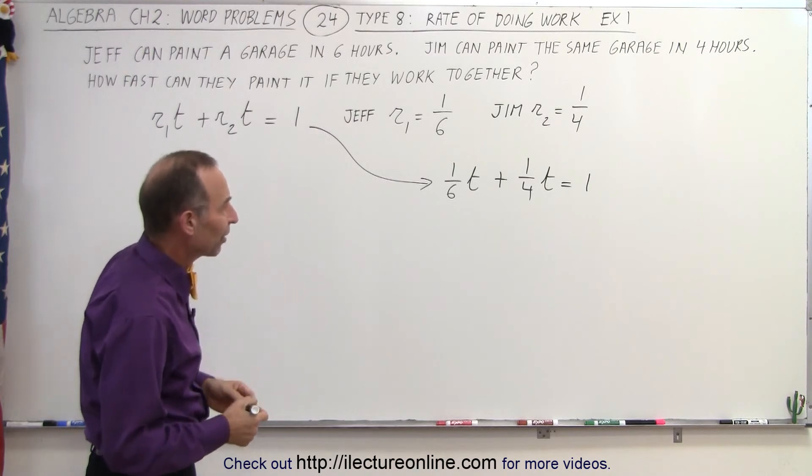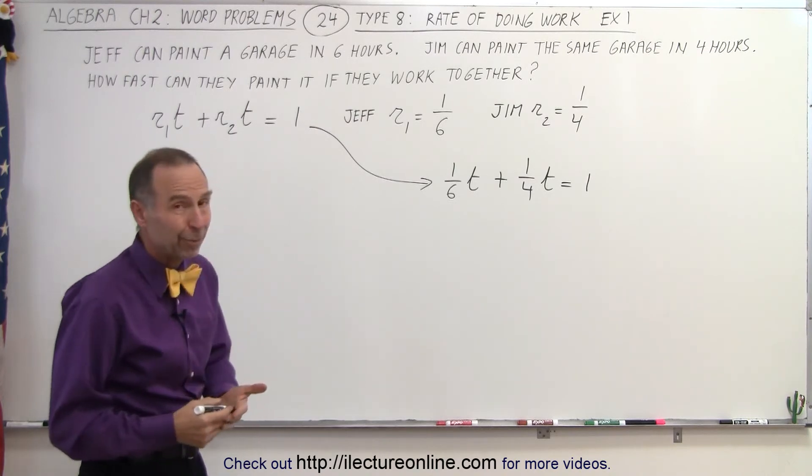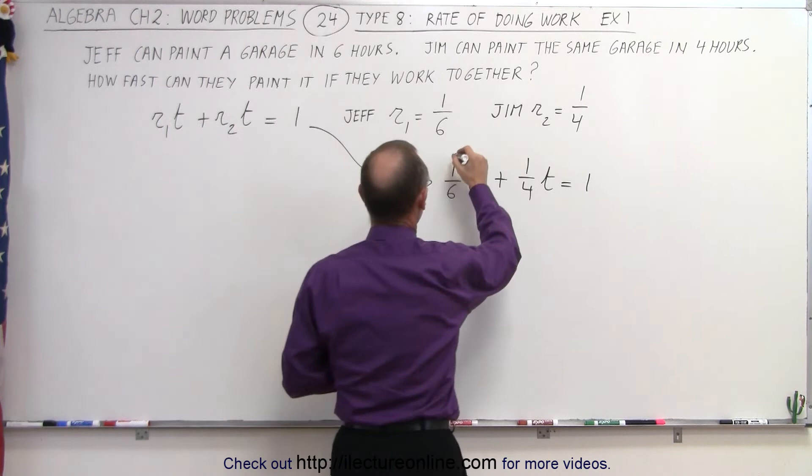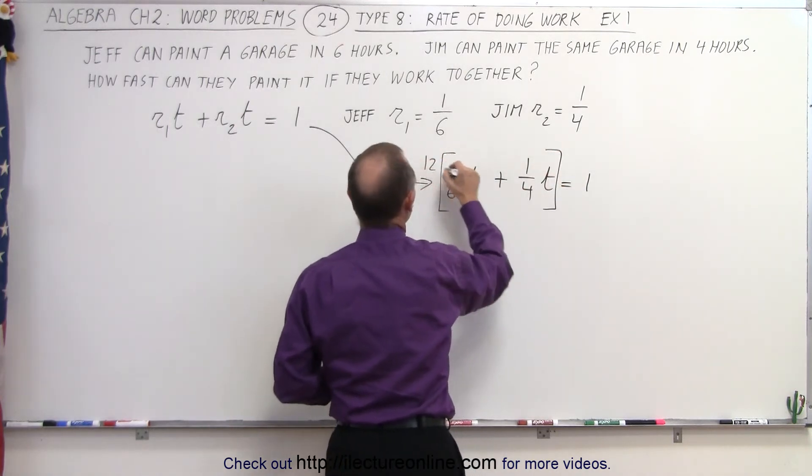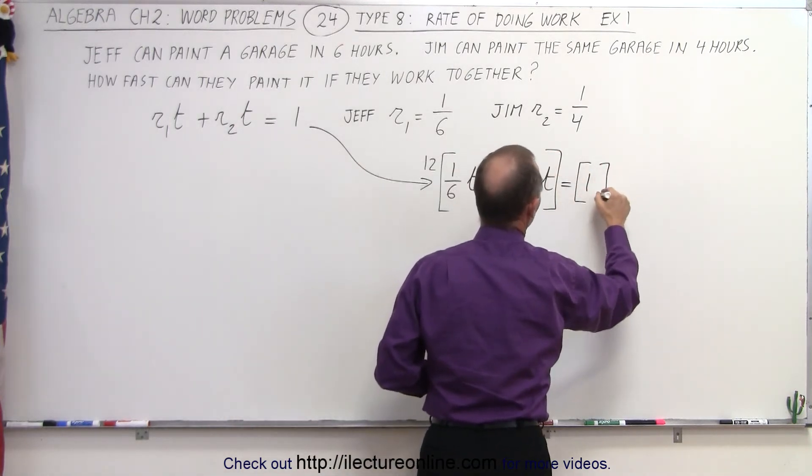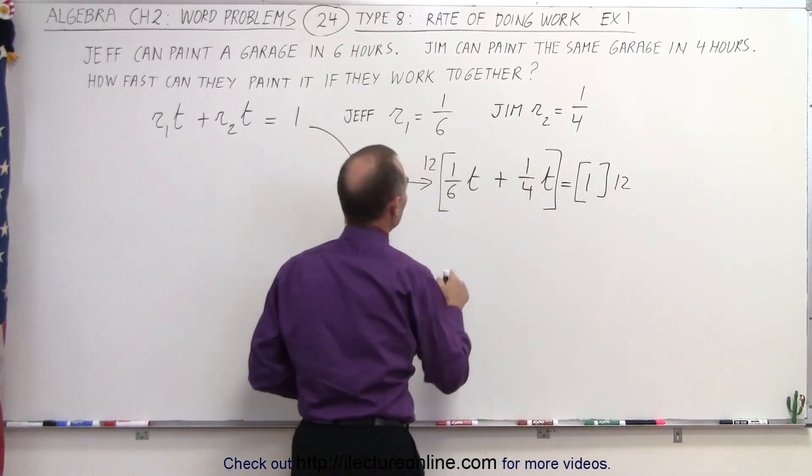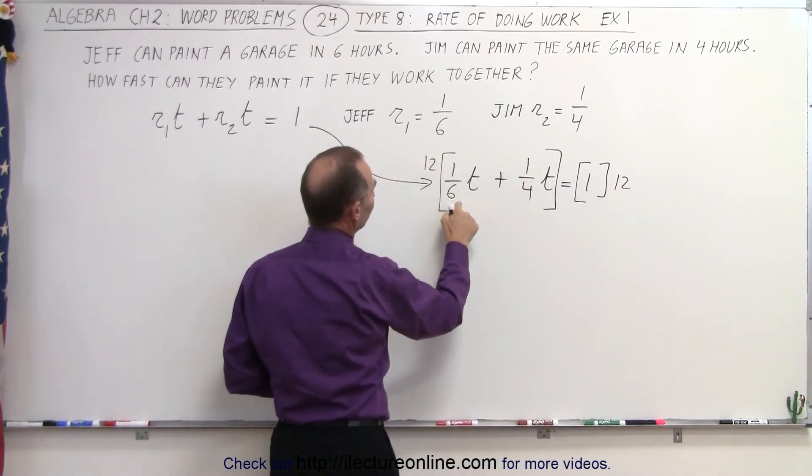And so we're going to multiply both sides by the lowest common denominator, which in this case is 12. So we'll multiply the left side by 12, and we'll multiply the right side by 12.